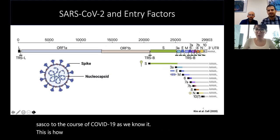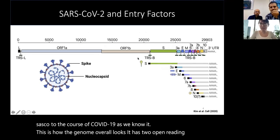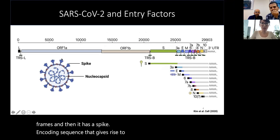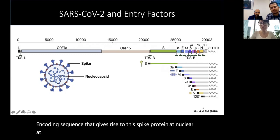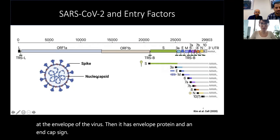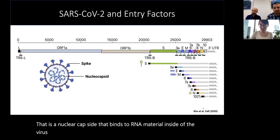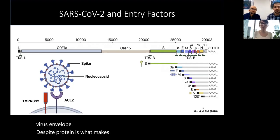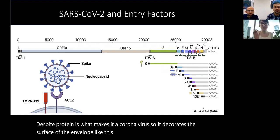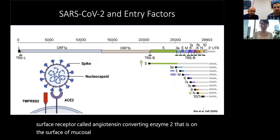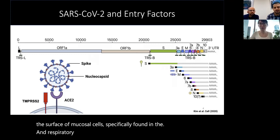This is how the genome overall looks: it has two open reading frames and a spike-encoding sequence that gives rise to the spike protein at the envelope of the virus. It has an envelope protein and a nucleocapside that binds the RNA material inside. This spike protein decorates the surface of the envelope like a corona, and it binds to a surface receptor called Angiotensin Converting Enzyme 2 (ACE2) found on mucosal cells — primarily in the respiratory tract, but also in the eye and colon.